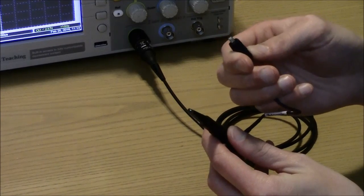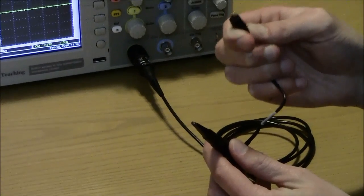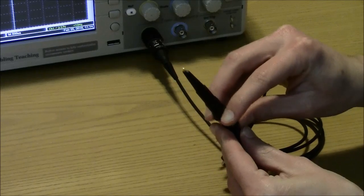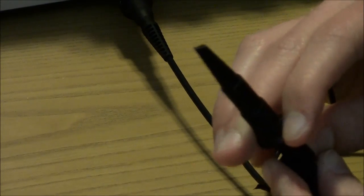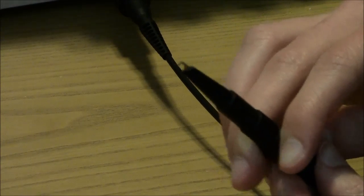The probe consists of two parts. One is an alligator clip. You'll attach this to the ground in your circuit, the common ground. The other is a hook which has this retractable sheath and you will attach this to whatever part of the circuit you're monitoring.